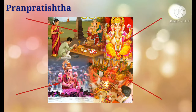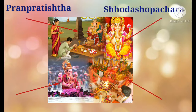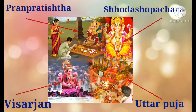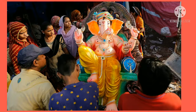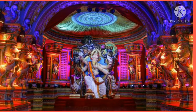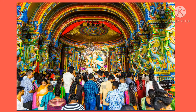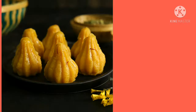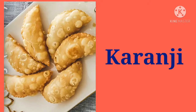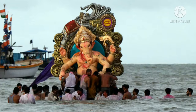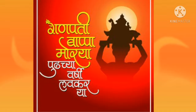There are four main rituals performed during the 10-day long festival: Pranapratishtha, Shodashopachara Puja, Uttarpuja and Ganapati Visarjan. People bring Ganesha's idol and install it in a beautifully decorated Pandal. Prayers and offerings of Prasad are made to Ganesha. Ganesha's favorite dishes like Modak, Puran Poli and Karanji are offered. At the ceremony of Ganapati Visarjan, the idol of Ganapati Bappa is immersed by the people in the sea.